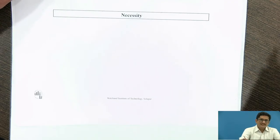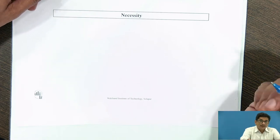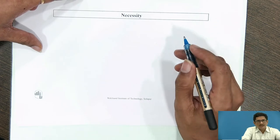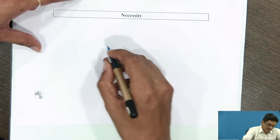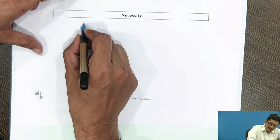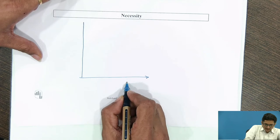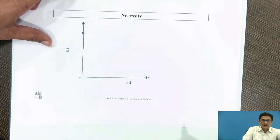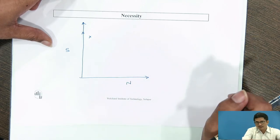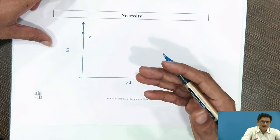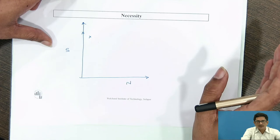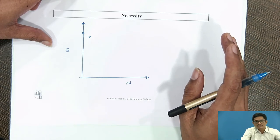Dear students, what is the necessity to use this method? You may recall what were the issues regarding the method by RR Moore — the laboratory method. We obtained the endurance limit by plotting number of cycles on the x-axis and amplitude stress on the y-axis. The method of RR Moore is used for specimens rather than components. There is a basic difference between a specimen and a component.